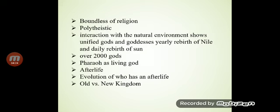Models of religion showed a holistic-type interaction with the natural environment. The unified God concept included the early rebirth of the Nile and the daily rebirth of the Sun. Over 2000 gods emerged. The afterlife was central, and the evolution culminated in the concept of the afterlife in the New Kingdom.